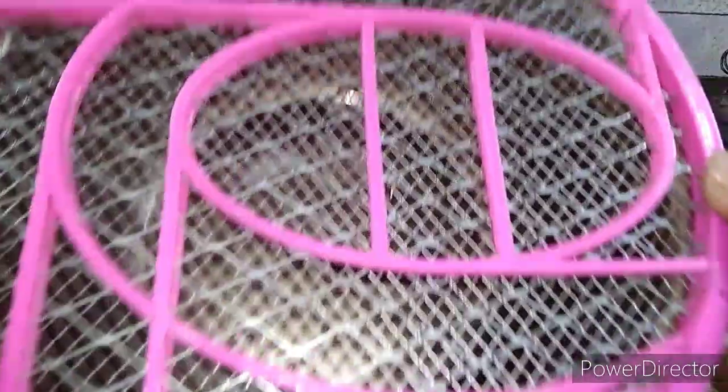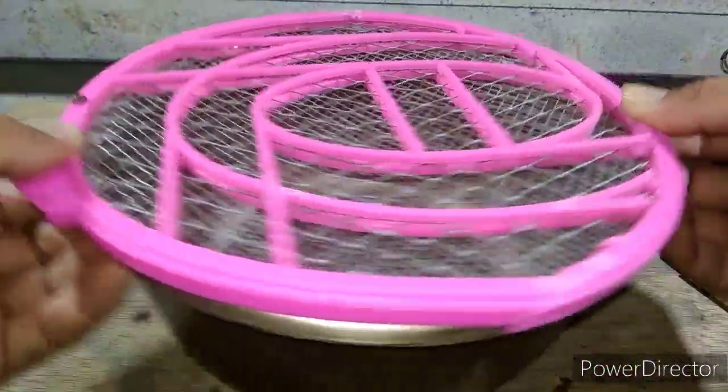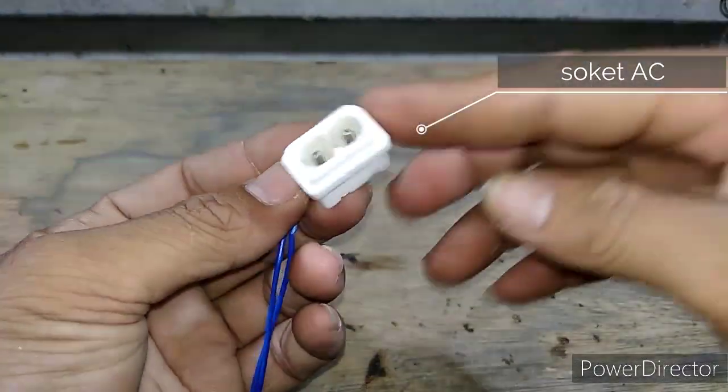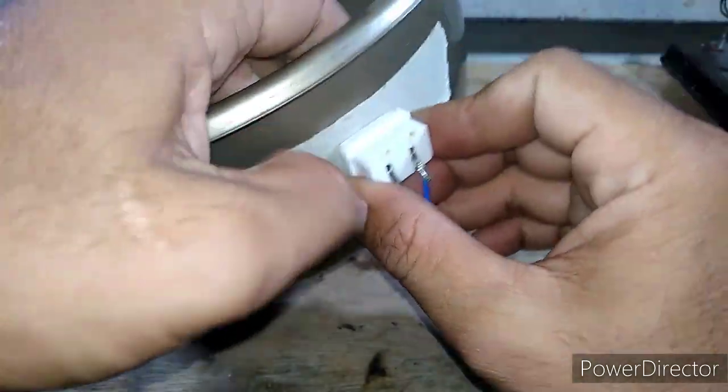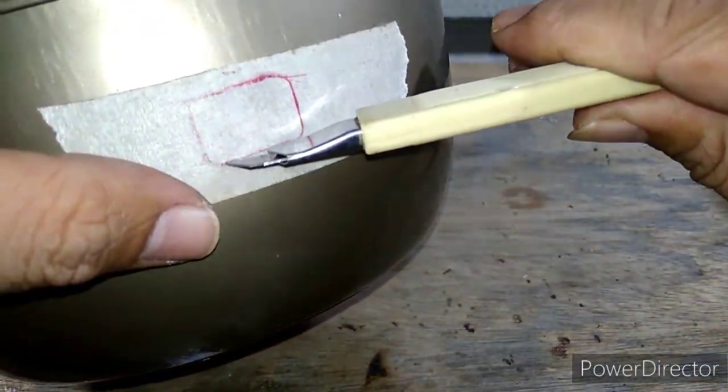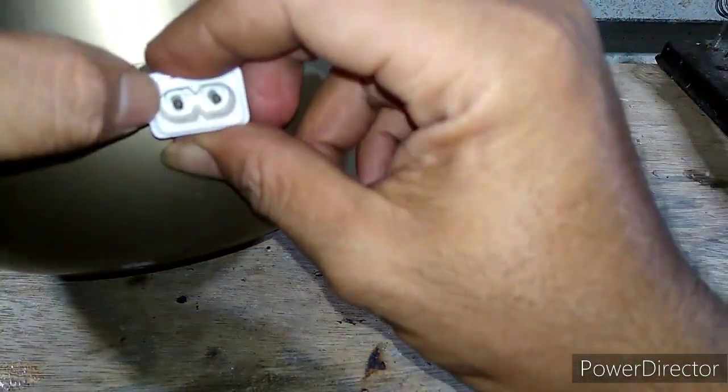Dan hasilnya seperti ini. Lalu saya siapkan soket AC. Saya akan pasang di bagian baskom sebelah sini. Saya lubangin terlebih dahulu. Oke, seperti ini.